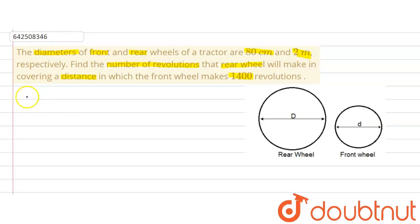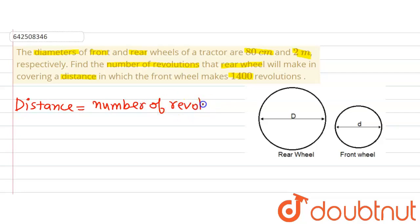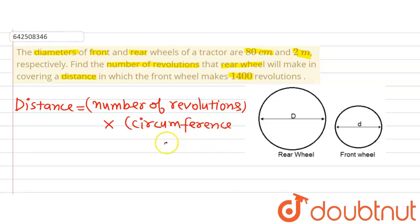We know the distance formula: the distance covered by the tractor is equal to the number of revolutions of the wheel multiplied by the circumference of the wheel. Because in one revolution, the wheel will cover a distance equal to its circumference. So to calculate the distance, if we calculate the number of revolutions and multiply it by the circumference of the wheel, we can calculate the distance covered.